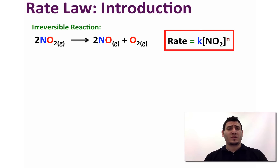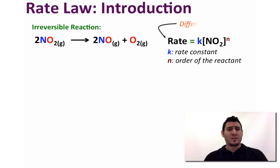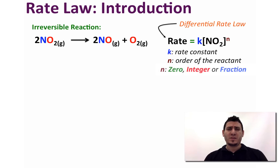Therefore, the rate law will be governed by the expression: rate = K × [reactant]^n, where K is called the rate constant, n is the rate order, and this is called the differential rate law. Note that n could be 0, an integer, or a fraction.